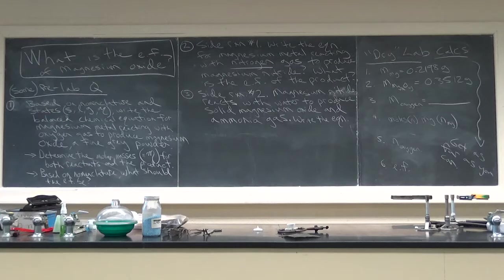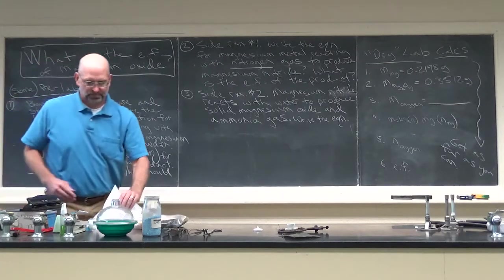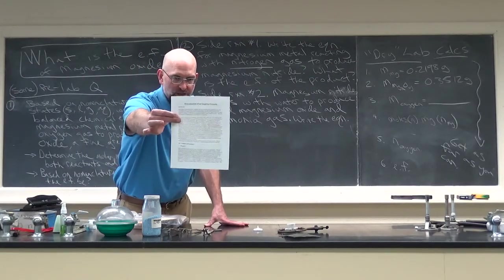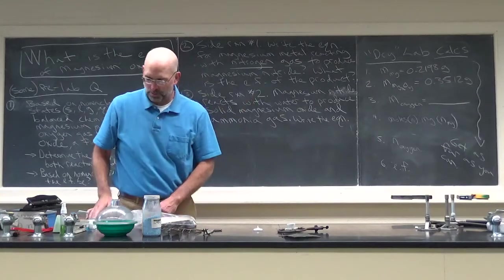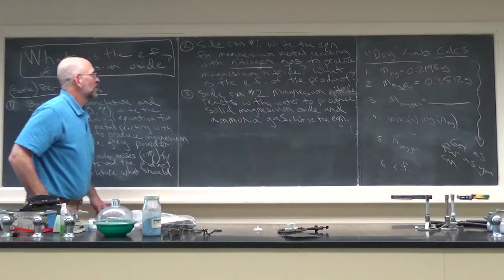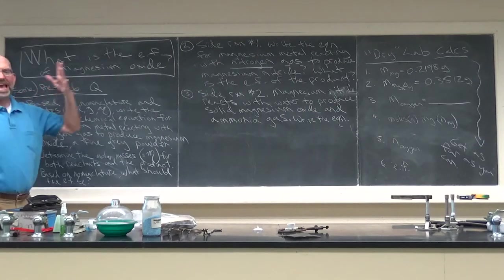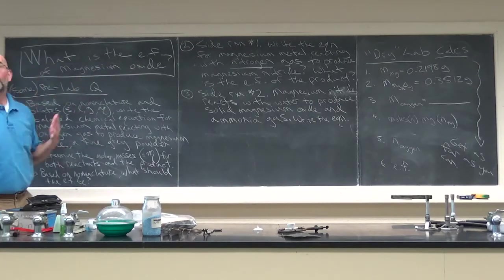Then we'll talk about using a Bunsen burner, a desiccator, and all that stuff. So this is the activity: Determination of an Empirical Formula. Make sure you print that out, bring it with you, and do all your pre-lab stuff like your instructor tells you to do. We're not determining just any empirical formula - we are determining what is the empirical formula, EF, of magnesium oxide.